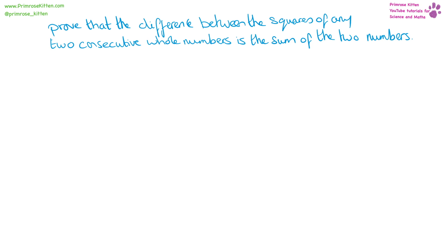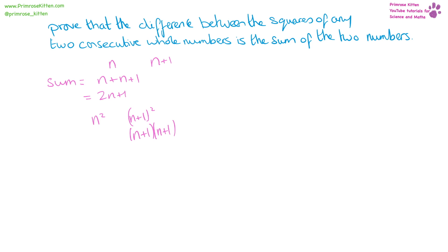Prove that the difference between the squares of any two consecutive whole numbers is the sum of these two numbers. Our two numbers are n and n plus one. The sum of these two numbers is n plus (n plus one), giving 2n plus one. Expanding (n plus 1)² gives n² plus 2n plus 1. The difference between the squares is (n² plus 2n plus 1) minus n², giving 2n plus one, which equals the sum of the two numbers.